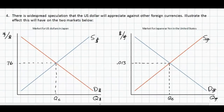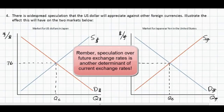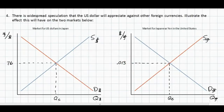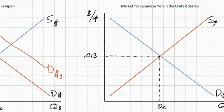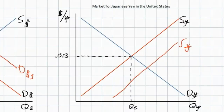The next question has us consider the effect of widespread speculation that the US dollar will appreciate against other foreign currencies — on the market for the US dollar in Japan and the market for the Japanese yen in the United States. Speculation is simply the expectation that the value of a certain asset will either increase or decrease in the future. If international investors expect the value of the US dollar will rise, they will wish to hold more US dollars now, including Japanese investors who may wish to invest in US dollar denominated assets in anticipation of their future appreciation. This leads to an increase in the current demand for US dollars. Since Japanese investors now wish to hold more US dollars, they will supply more Japanese yen to the US market, increasing the supply of yen in the United States.